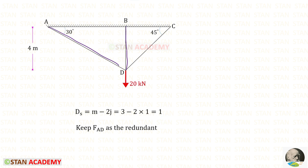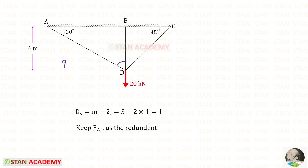Out of these three member forces, we have to select any one as the redundant. I am going to take member force AD as the redundant. Now we have to find the member forces in terms of FAD. This angle will be 90 minus 30, so it will be 60. And this angle will be 90 minus 45, so it will be 45.